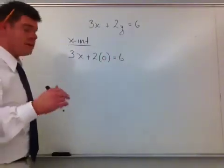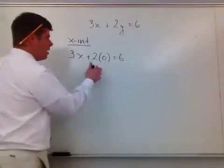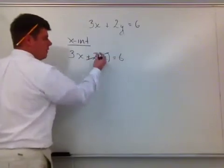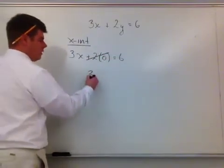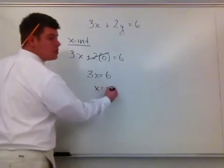So, I'm inputting the 0 in for the y, and what that creates here is that that now is 0. So, I get 3x = 6. So, here x = 2.